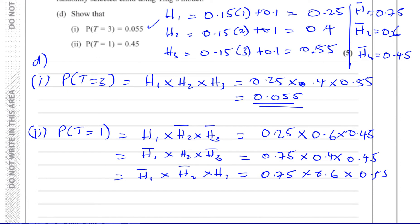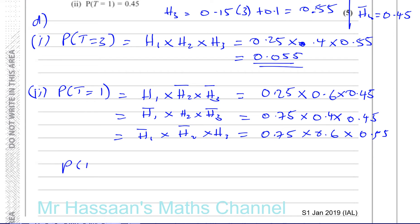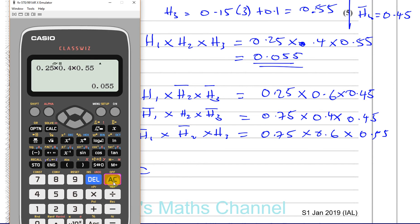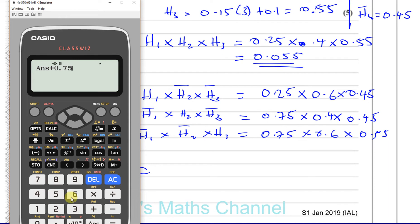We multiply each case and add them all together to get P(T=1). Be careful on the calculator. The first case: 0.25 × 0.6 × 0.45 = 0.0675. Since this is a 'show that' question, it's important to write down each individual value clearly to show all steps to the examiner.